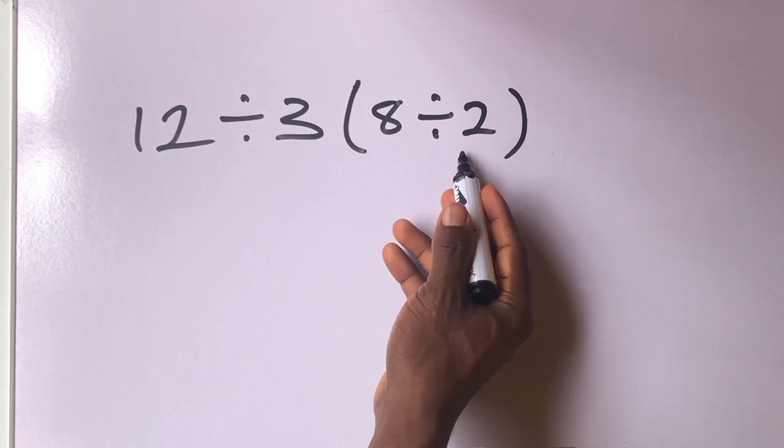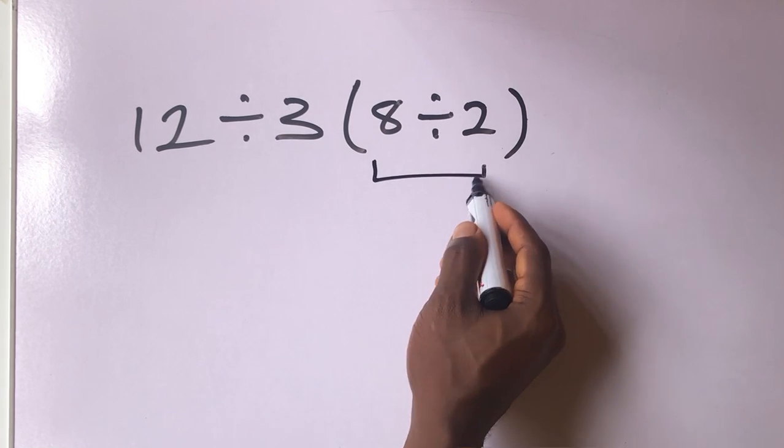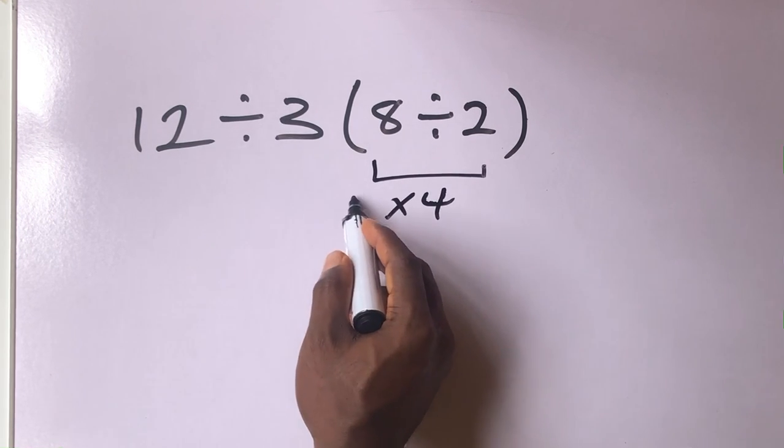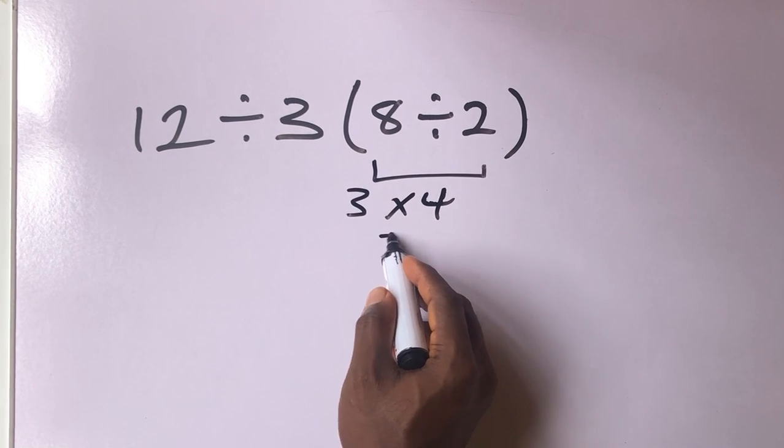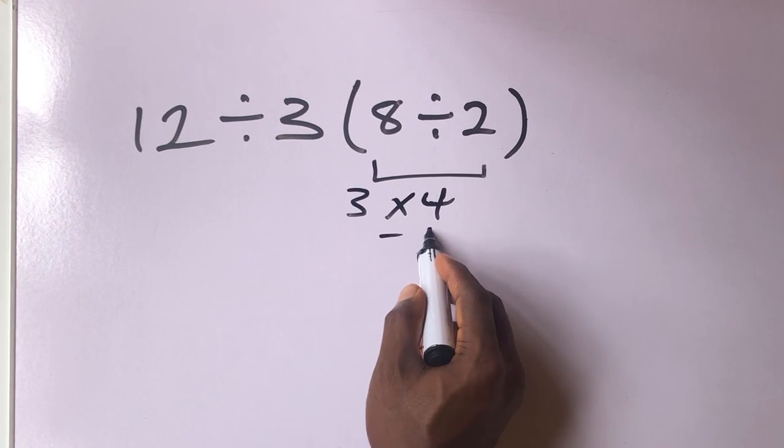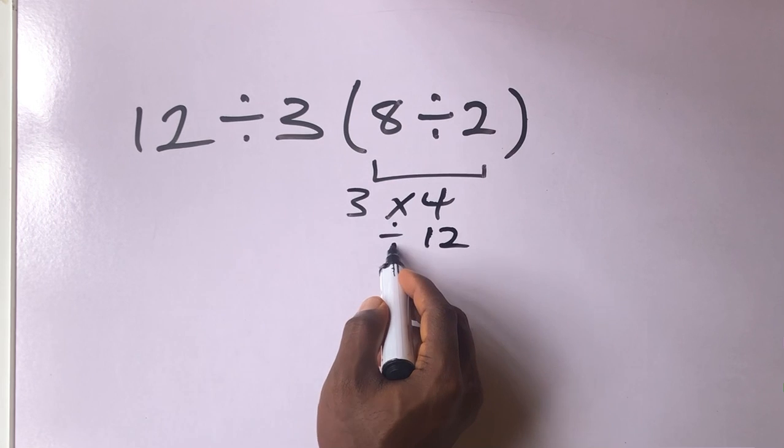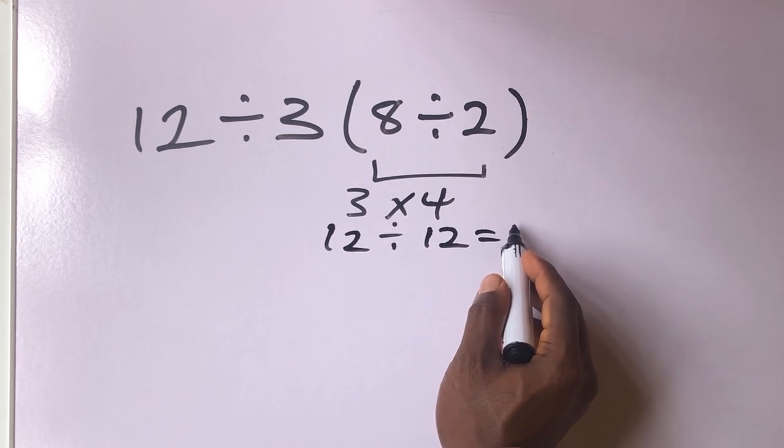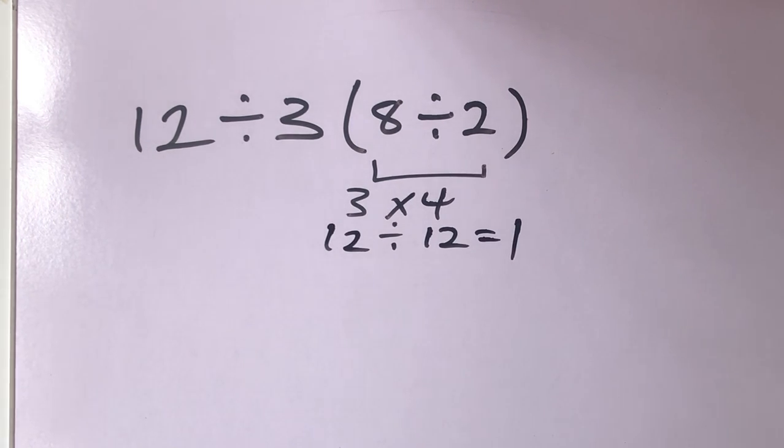8 divided by 2 will give us 4. 3 times 4 is equal to 12. 12 divided by 3 will give us 12. But this answer is not correct.